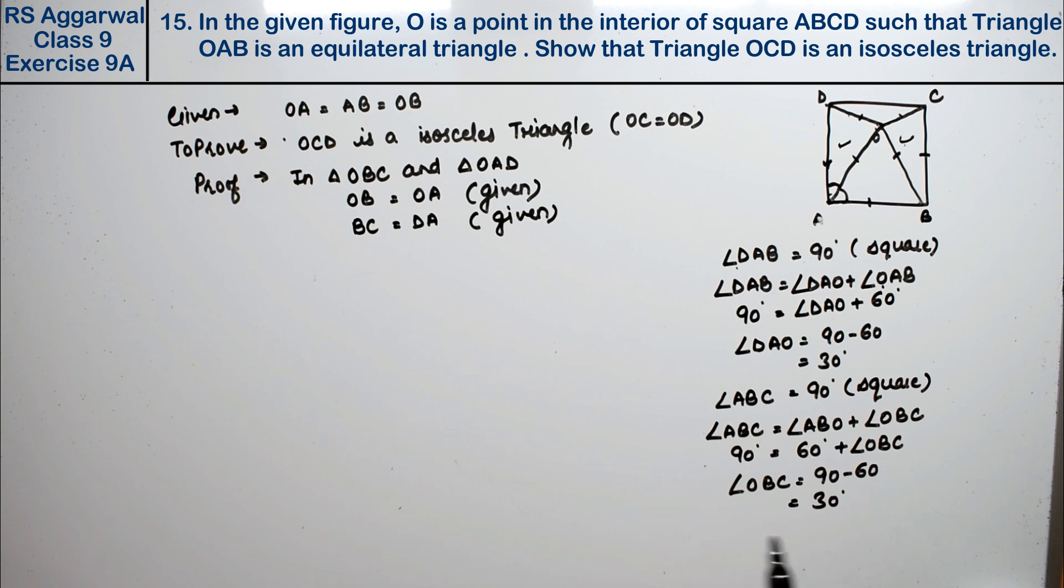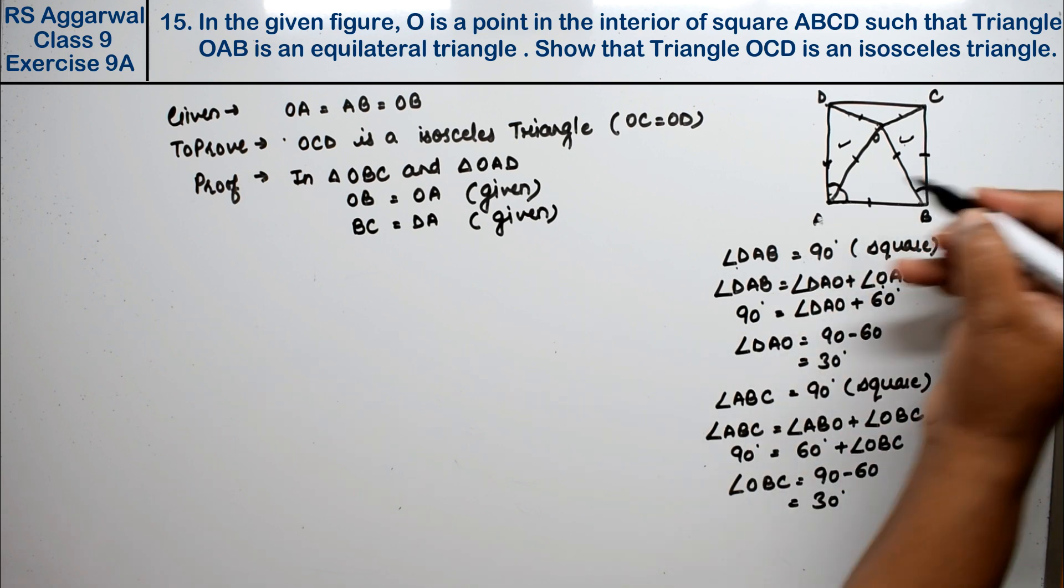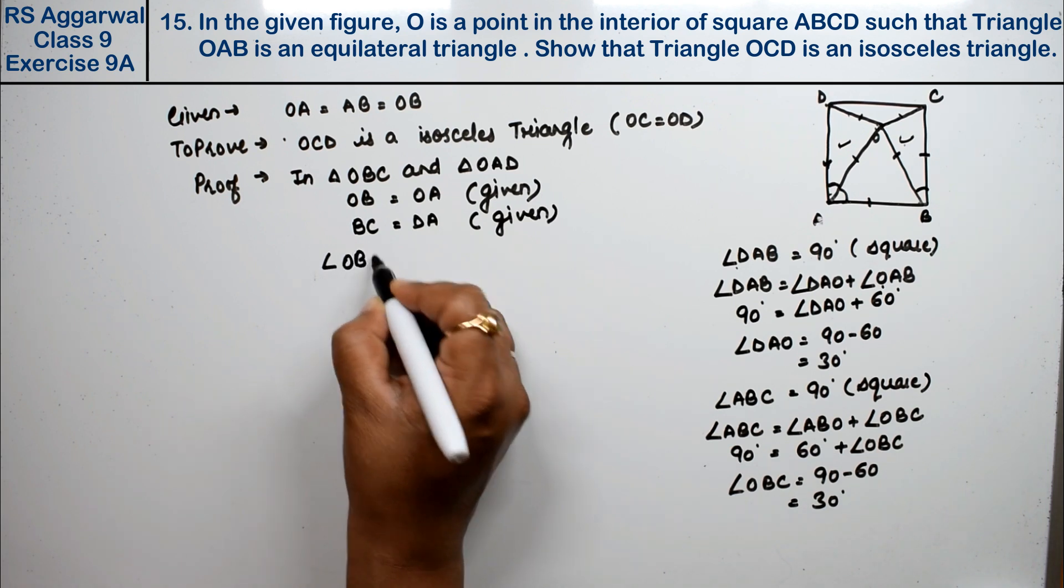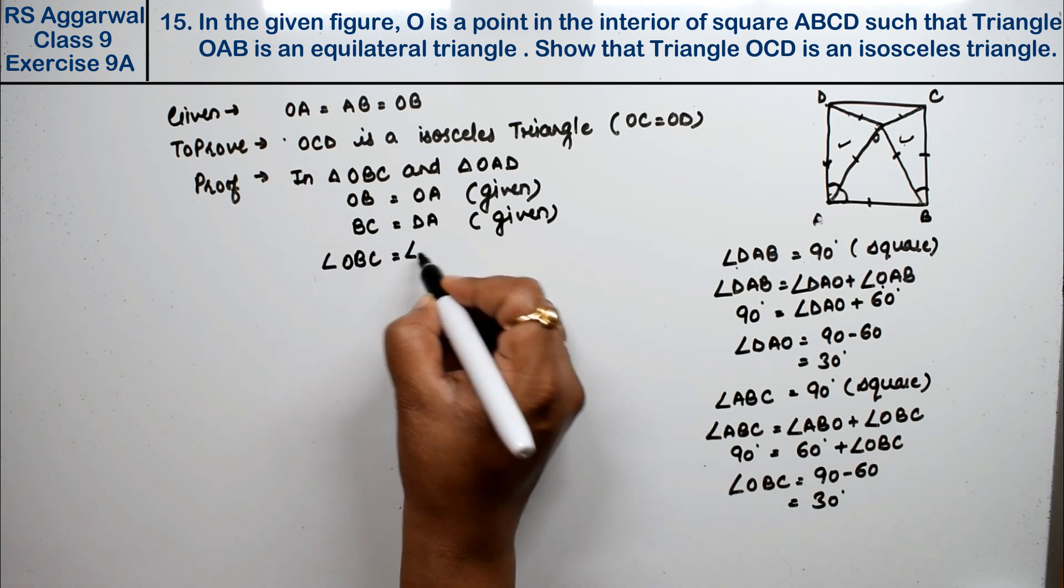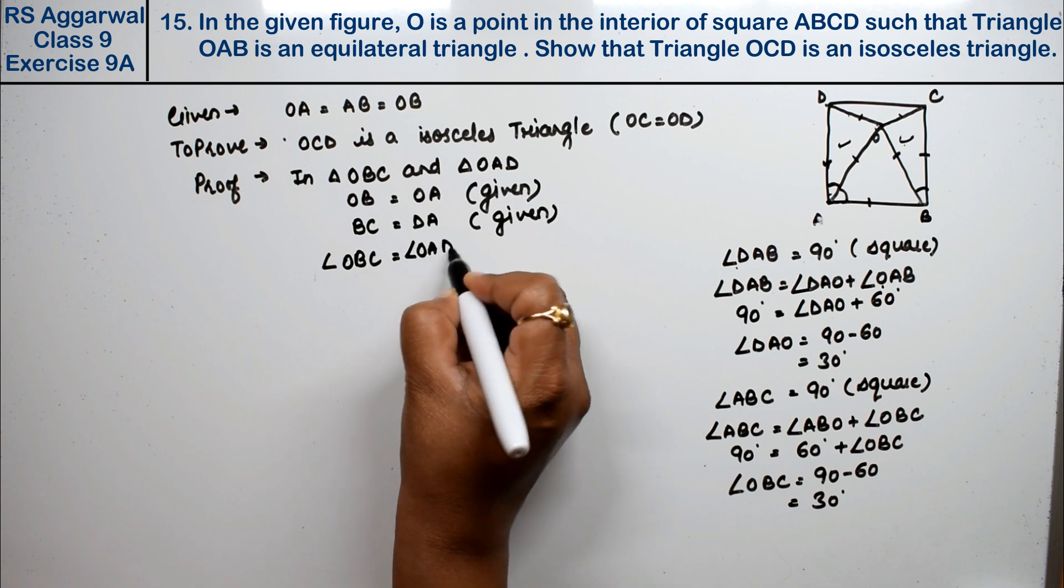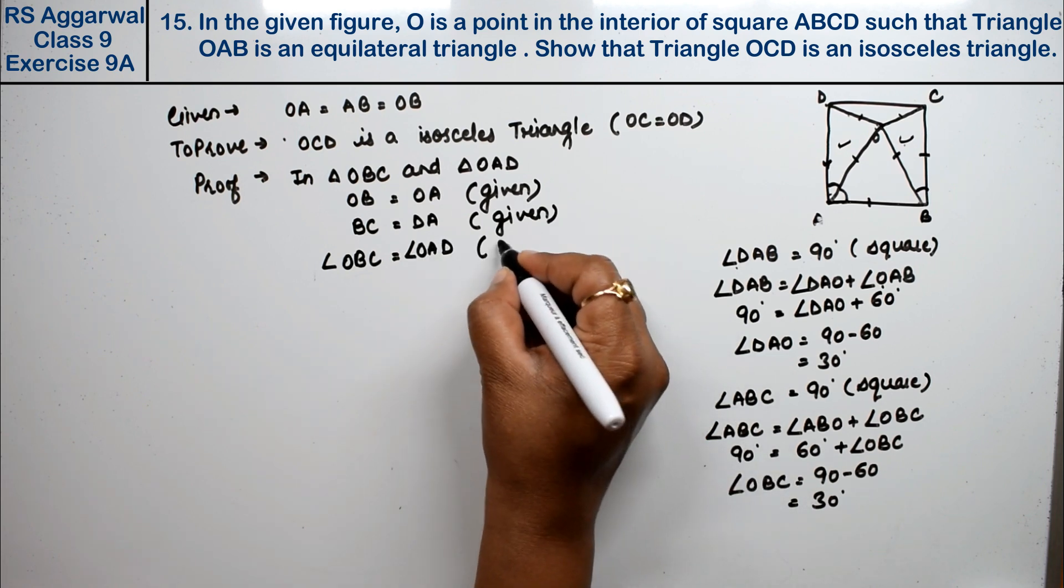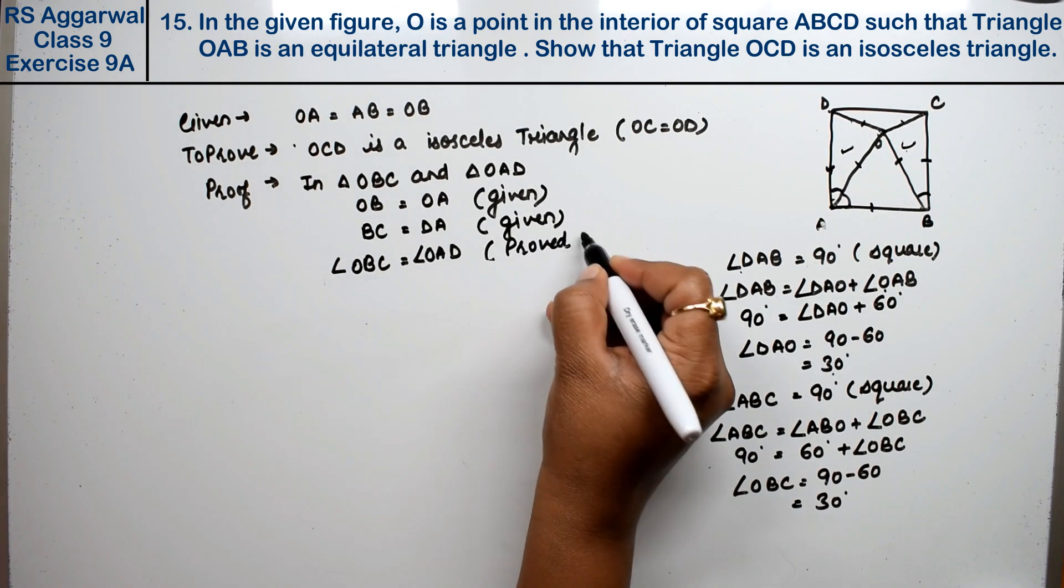That means these two angles are equal. Angle OBC equals angle OAD, both equal to 30 degrees. Proved.